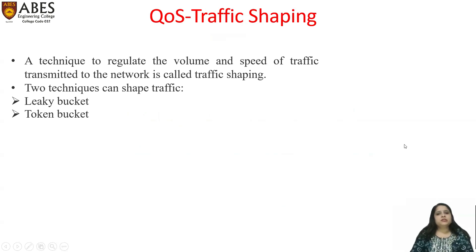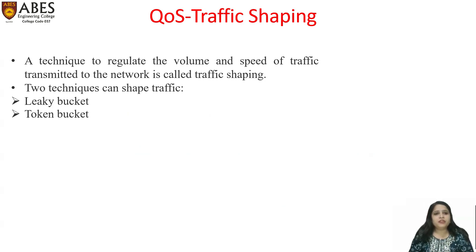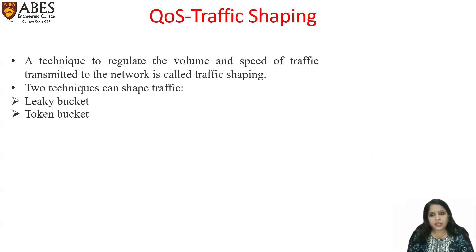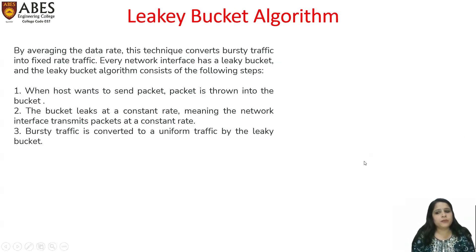Traffic shaping is basically a technique which is used to regulate the volume and the speed of traffic transmitted to the network. It is a mechanism to control the data rate and the speed of traffic sent to the network. There are two techniques used to shape traffic: the first is the leaky bucket algorithm and the second is the token bucket algorithm.